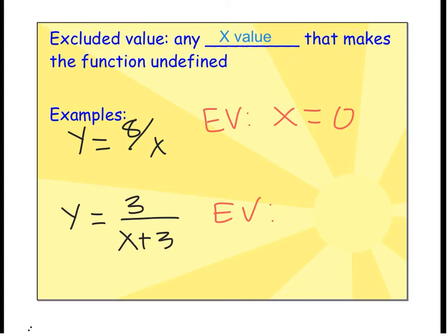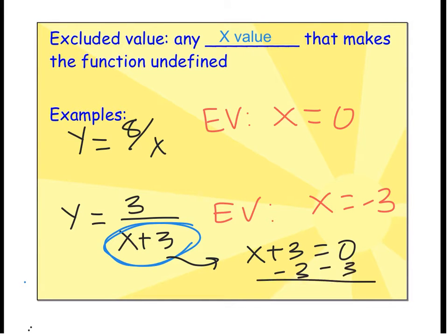Looking at another example, y equals 3 divided by x plus 3. We don't care about the top of the fraction right now; we care about the bottom because we can't divide by 0. What x value would make the bottom 0? If x was equal to negative 3, well negative 3 plus 3 gives us 0, so the excluded value is negative 3. If you get stuck, just take what's in the bottom and set it equal to 0, then solve for x.